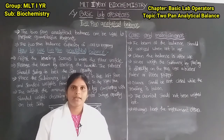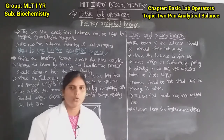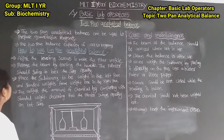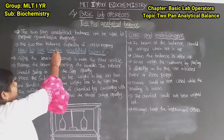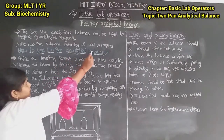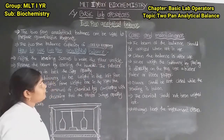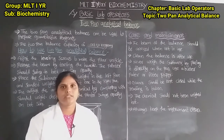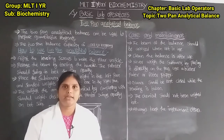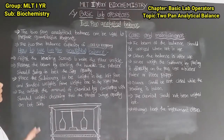The two pan balance has a capacity of 0.001 to 100 grams. We can measure any substance from 0.001 up to 100 grams using this two pan analytical balance. Next, let us learn how to use the two pan analytical balance.